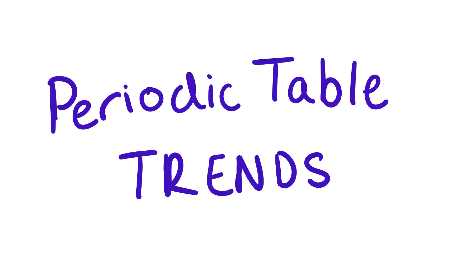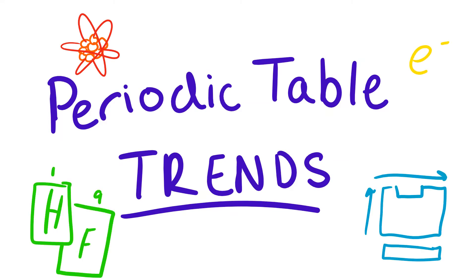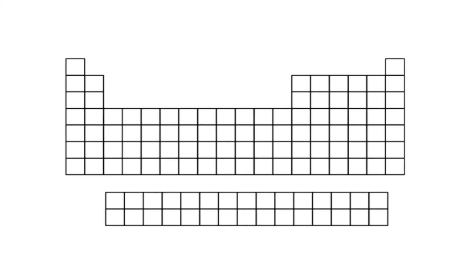Let's talk about periodic trends. The periodic table is set up by increasing atomic number, which indicates the number of protons in the nucleus of an atom.